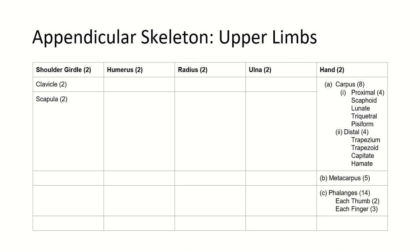In the shoulder girdle we have two types of bones: clavicle and scapula. In the hand we have three types of bones: carpus, metacarpus, and phalanges. We have eight carpal bones divided into four proximal — scaphoid, lunate, triquetral, and pisiform — and four distal — trapezium, trapezoid, capitate, and hamate.